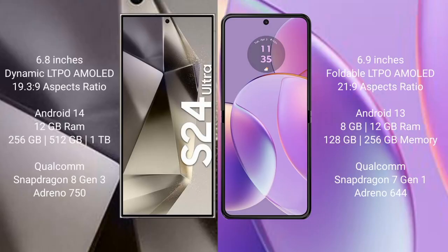Samsung Galaxy S24 Ultra comes with a 6.8-inch dynamic LTPO AMOLED display and aspect ratio 19.3:9. Motorola Razr 40 comes with a 6.9-inch foldable LTPO AMOLED display and aspect ratio 21:9.